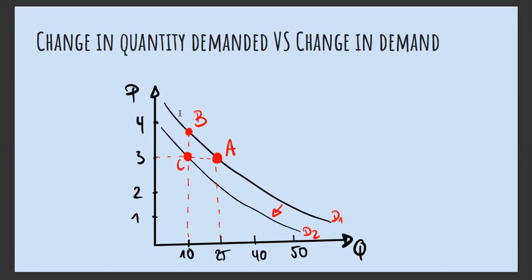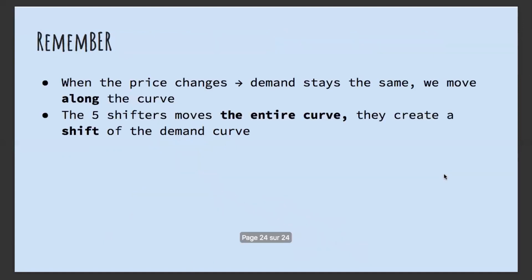We could also go from A to C, reaching a quantity of 10 while the price stays the same at three. In that case, the demand shifted to the left — this is a decrease in demand. So remember: when the price changes, demand stays the same and we just move along the curve — that's a change in quantity demanded. But when one of the five shifters acts, the entire curve moves — that's a change in demand. Shifters cause a change in demand; price causes a change in quantity demanded.